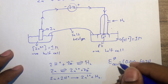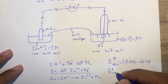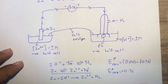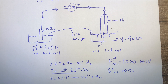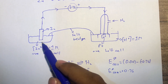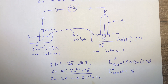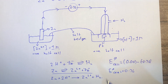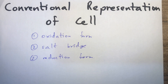E°cell = +0.76 V, which is positive so the reaction is feasible, and it's greater than +0.3 V so the reaction goes to completion. Observations: the mass of the zinc electrode decreases as zinc ions are formed, and bubbles of hydrogen gas are evolved as hydrogen ions are reduced.